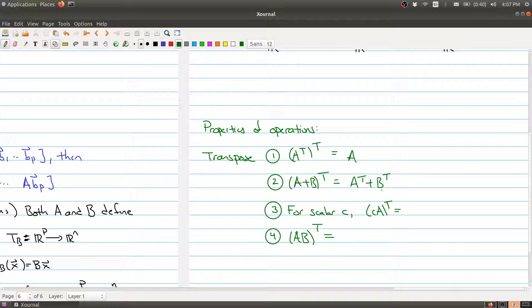What about scalar multiplication? Well, you could first take your matrix, multiply it by your scalar C, and then take the transpose. Or you could take the transpose of your matrix first and then multiply it by the scalar.